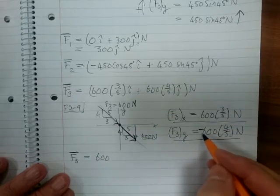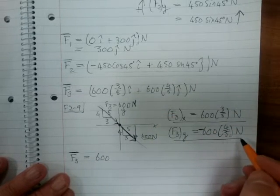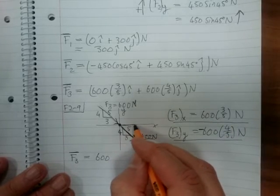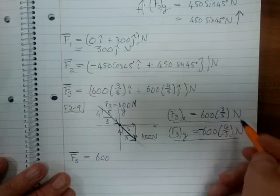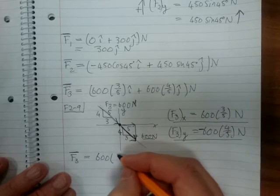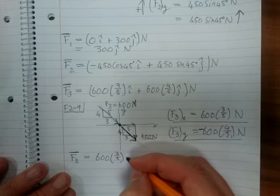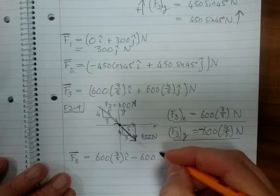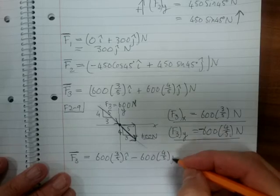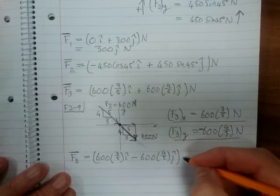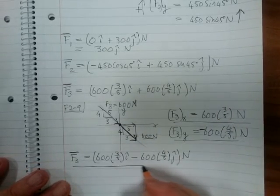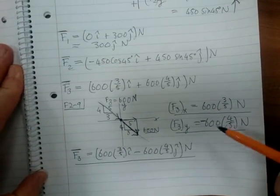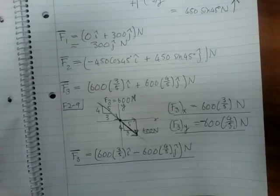The X component is positive, so that is 600 times 3 over 5. So we have 600 times 3 over 5 in the I minus 600 times 4 over 5 in the J Newton. So hopefully these couple of practice problems will help you in the future. Thanks, cheers!